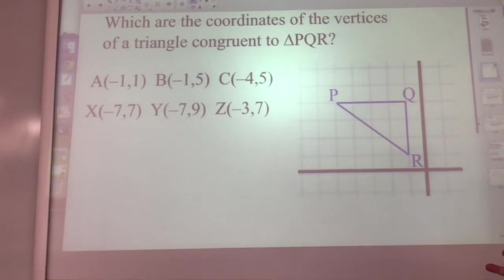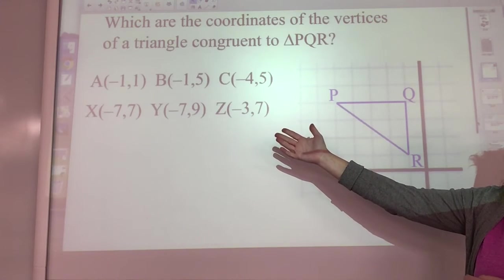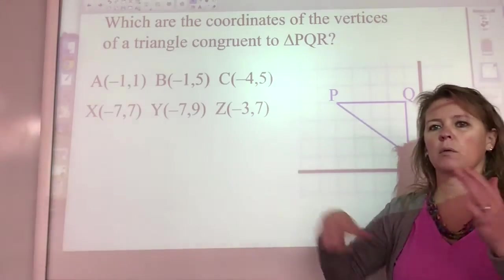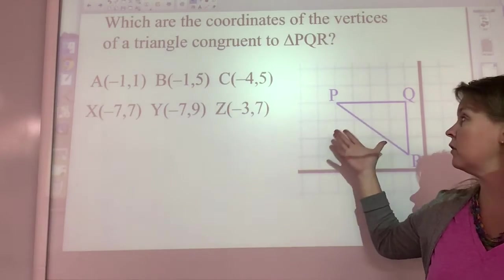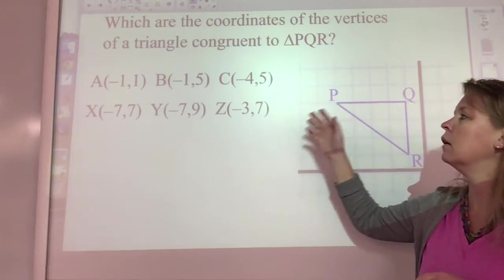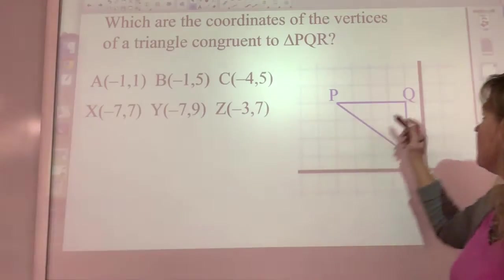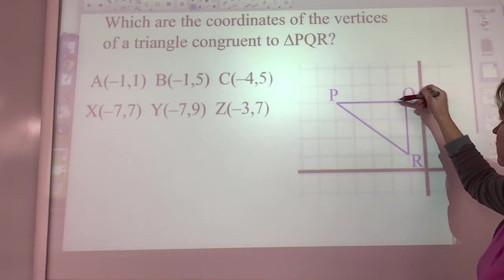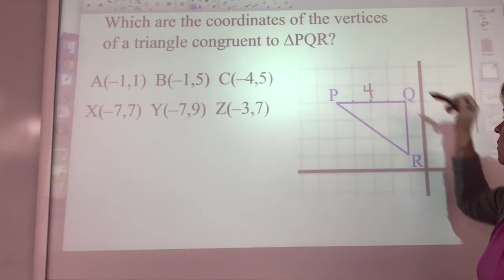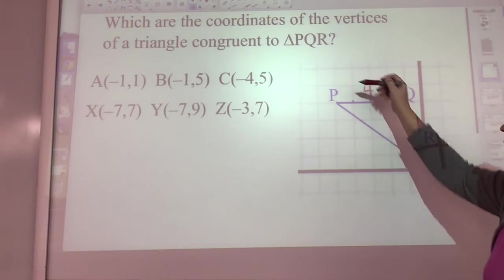This problem asks: which are the coordinates of the vertices of a triangle congruent to triangle PQR? We have triangle PQR, and we want to know if triangle ABC or triangle XYZ is congruent. Because we're working with side-side-side, we're going to measure the sides of each triangle using the distance formula — or we can just count spaces when sides go straight across. PQR has sides of four spaces and three spaces. For the diagonal side PR, using the distance formula: square root of (negative five minus negative one) squared plus (four minus one) squared gives us the square root of 25, which is five. So our sides are three, four, and five.